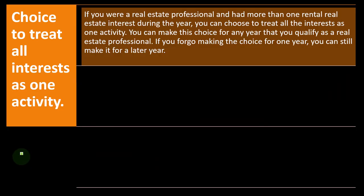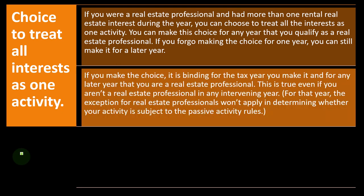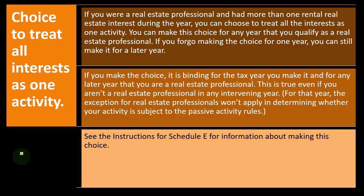Choice to treat all interests as one activity: if you were a real estate professional with more than one rental real estate interest during the year, you can choose to treat all the interests as one activity. You can make this choice for any year you qualify as a real estate professional, and if you forgo it for one year, you can still make it for a later year. Once made, this choice is binding for that tax year and any later year you are a real estate professional.